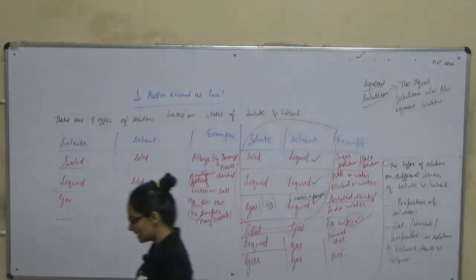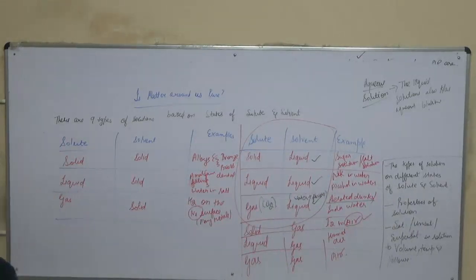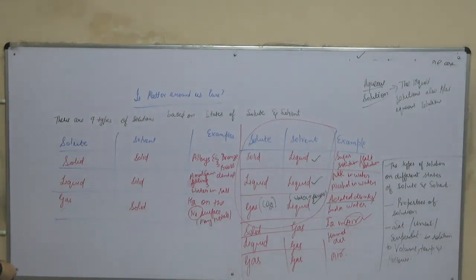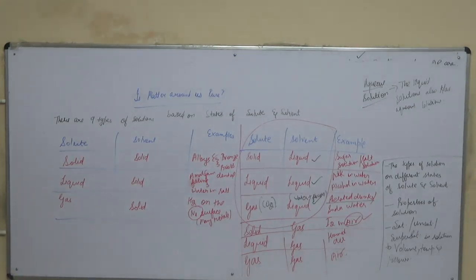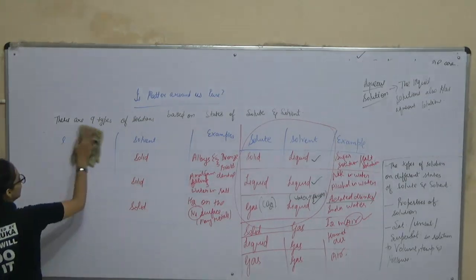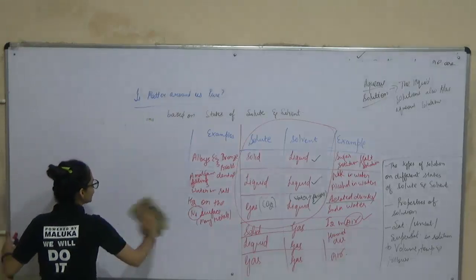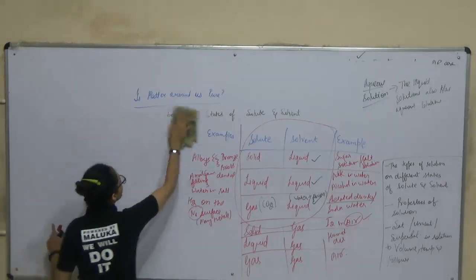Students, one key observation: whatever state the solvent is, that determines the state of the solution. Hence, based on state, solutions are of three types: solid, liquid, and gaseous. The state of the solvent determines the state of the solution.